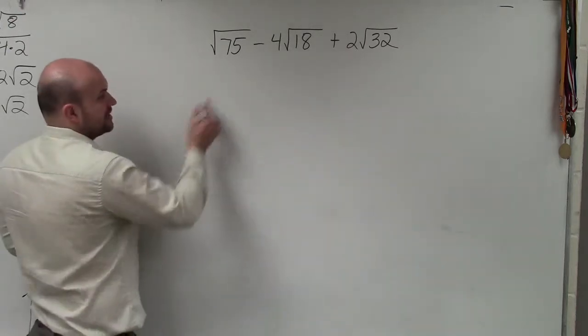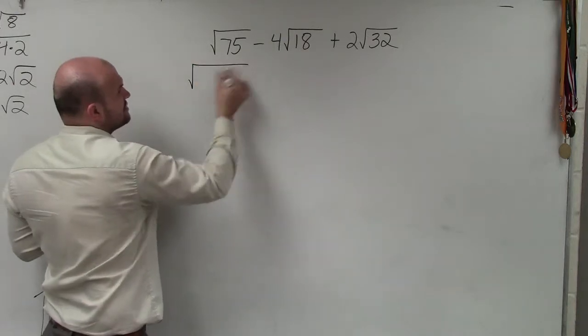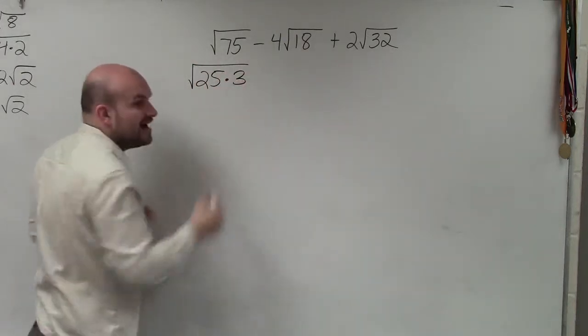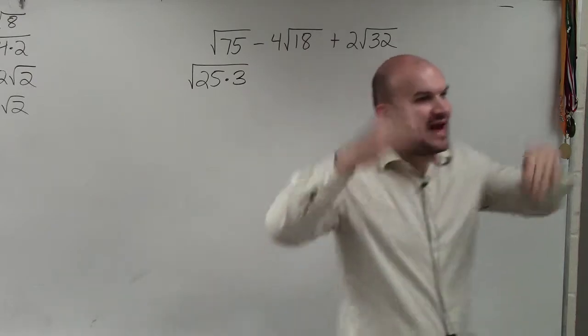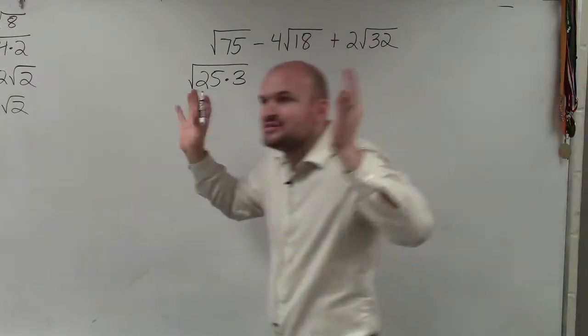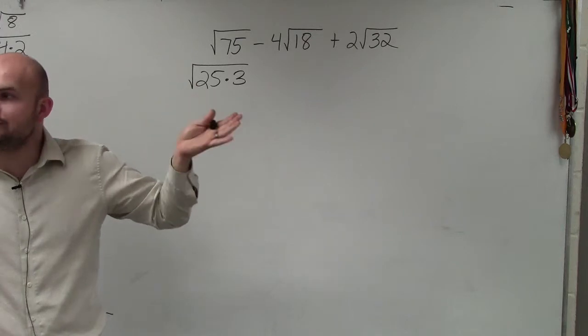For instance, if I'm doing the factoring tree, one thing I notice is 25 is a factor and 25 is a square number. So instead of factoring it down to all the factors, I'm just going to leave 25 as right there times 3.